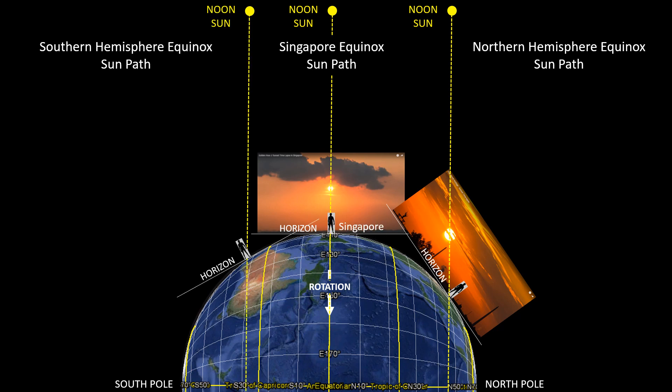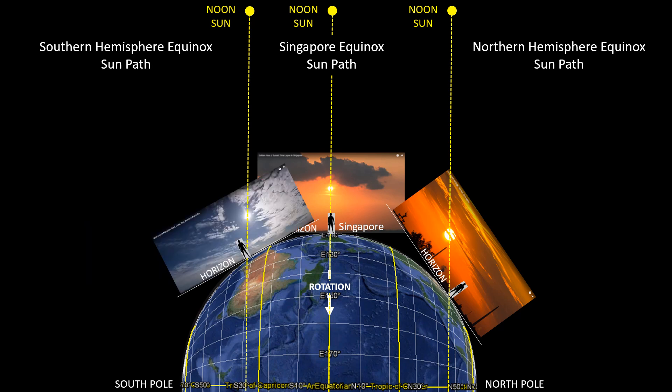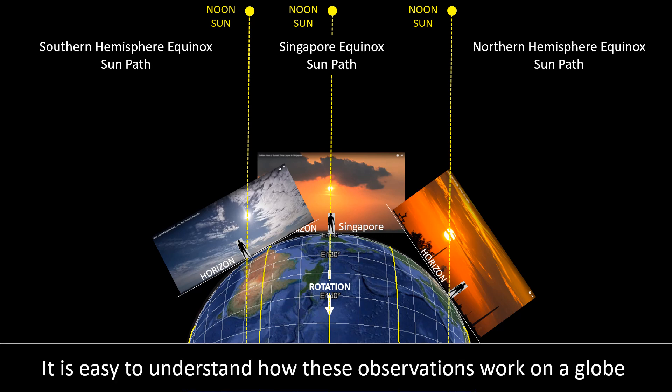And let's do the same thing for the southern hemisphere. So the observed sunrise angles down to the left. And again when I align this with the horizon in the southern hemisphere it explains why we see the setting Sun angling down to the left. So it is quite easy to understand how these observations work on a globe.